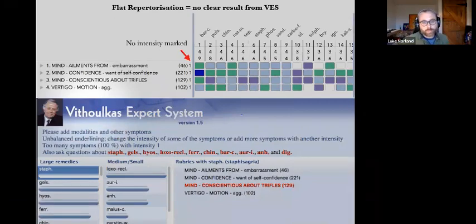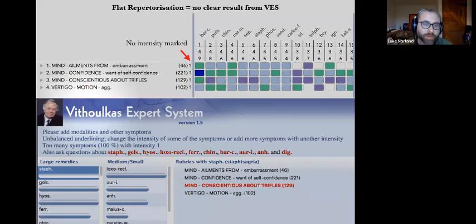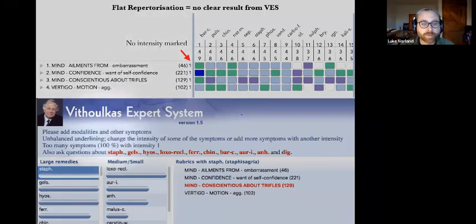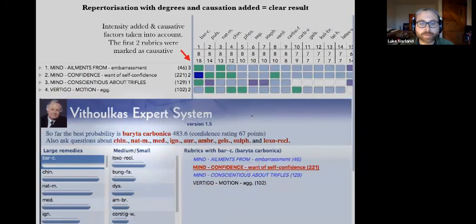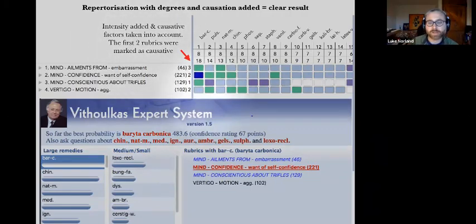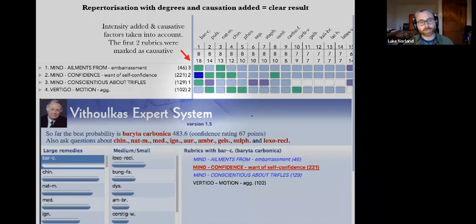Here's a little example. With symptoms like ailments from embarrassment, want of self-confidence, conscious about trifles, etc., you'd be looking at Baryta Carb probably. When you load the expert system, because there's no intensity marked, there's no standout remedy brought through. As soon as you add some intensity to the rubrics — and the first two were marked as causative as well — then the VES springs into action and says, look at Baryta Carb. It can be a nice way to confirm a choice when you're looking at a group of remedies that all cover the symptoms you've put in.